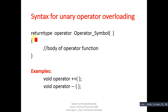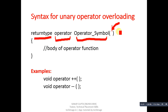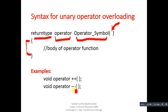Here is the syntax: first write the return type, then the operator keyword, then the name of the operator symbol, and the parentheses should be left blank because we can't pass an explicit argument. Inside the braces, you define the body of the operator function. For example: void operator++() and void operator--() — both with blank parentheses.